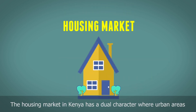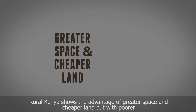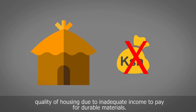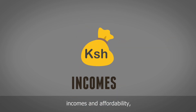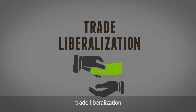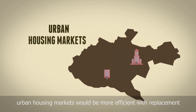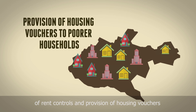The housing market in Kenya has a dual character, where urban areas experience a shortage of rental places and thus need supply enhancements. Rural Kenya shows the advantage of greater space and cheaper land, but with poorer quality of housing due to inadequate income to pay for durable materials. The policy solution consists of policies that enhance income and affordability, trade liberalization to reduce cost of construction materials, and replacement of rent controls with provision of housing vouchers to poorer households in urban housing markets.